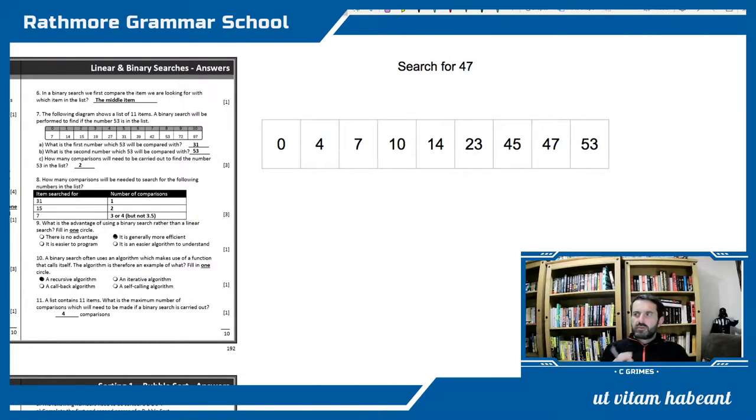So just to revise over the binary search, we can see a question on the screen that's looking to search for the integer value 47. Remember, the first thing about the binary search that we've learned is the array or the data set must be ordered. If this data set is not ordered, I cannot do a binary search. That's a major flaw with the binary search.